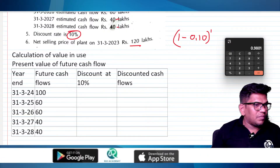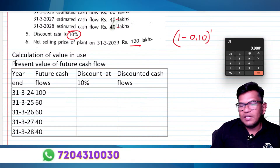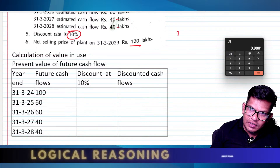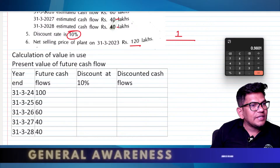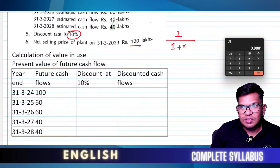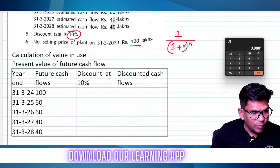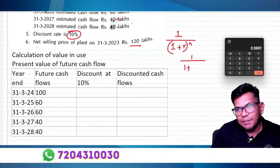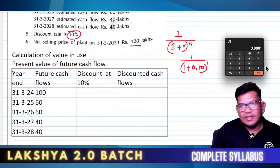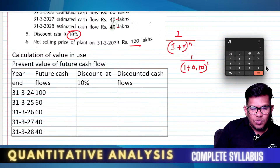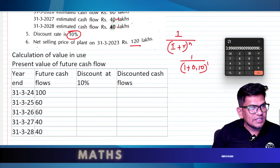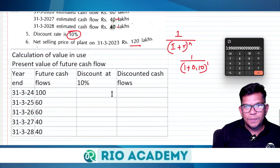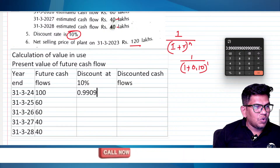The discount factor formula is: 1 divided by (1 plus r) raised to n. So for year 1, it is 1 divided by 1.10 raised to 1, which equals 1 divided by 1.10, giving approximately 0.909.